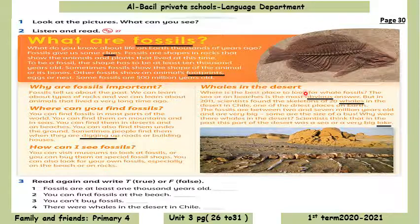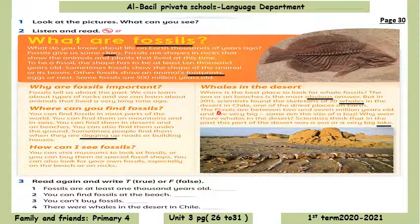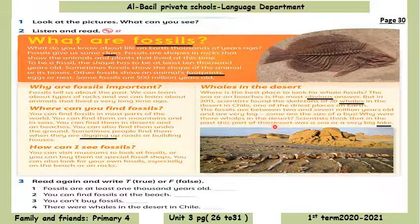Whales in the desert. Where is the best place to look for whale fossils? The sea or on beaches is the most obvious answer. But in 2011, scientists found the skeletons of 20 whales in the desert in Chile, one of the driest places on Earth. The fossils are between 2 and 7 million years old and are very big — some are the size of a bus. Why were there whales in the desert? Scientists think that in the past, this part of the desert was a sea or a very big lake.